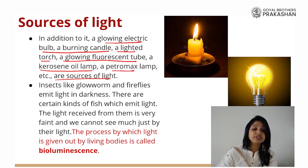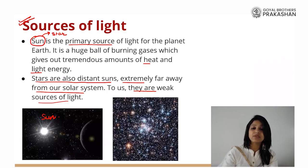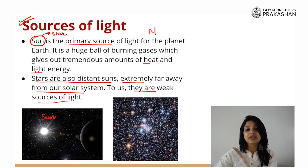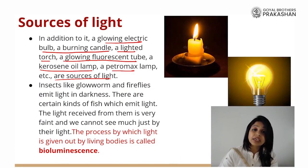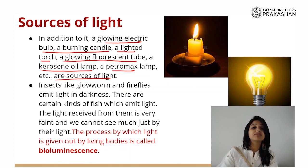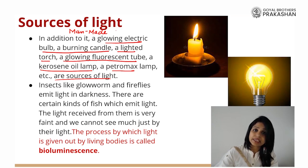What is the difference between the first one and the second one? Stars and the sun are natural sources of light. Humans have not made the sun, but humans can make a candle, they can make a glowing fluorescent tube, they can make a kerosene lamp. So these are man-made or artificial sources of light.